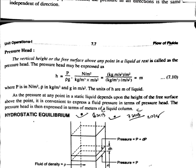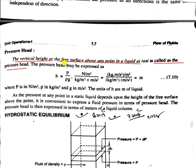Next is pressure head. The vertical height of the free surface above any point in a liquid at rest is called the pressure head. The pressure head may be expressed in terms of H, given by H equals P divided by rho times g.